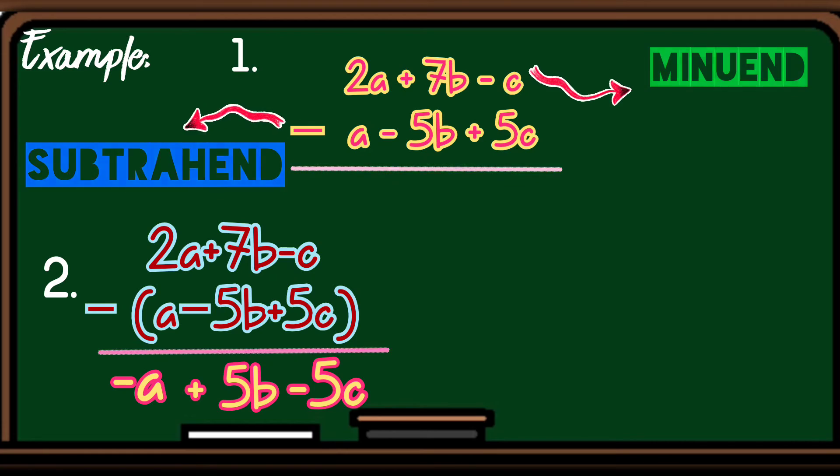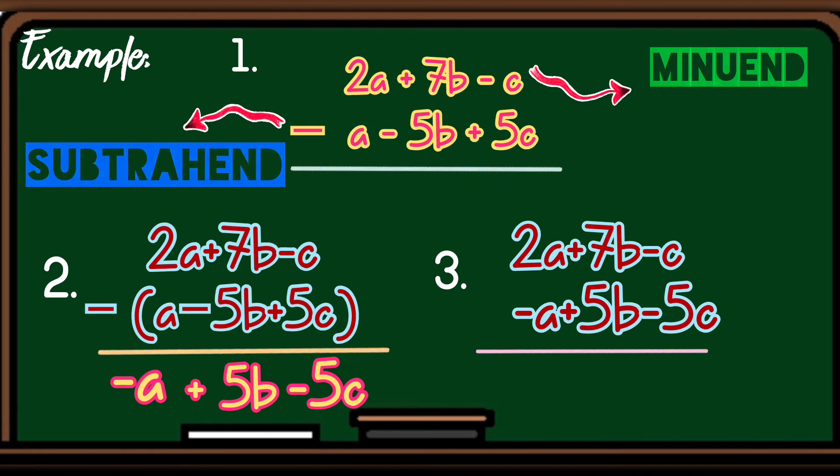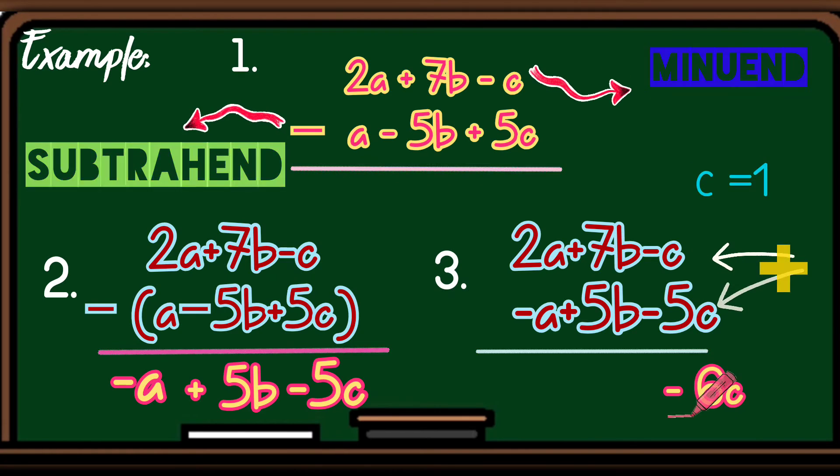Then, after that, pwede na natin i-add. So, magsisimula tayo sa kanan. Negative c plus negative 5c ay magiging negative 6c. So, bakit siya naging negative 6c? Kasi negative 1 plus negative 5 equals negative 6 and copy the variable c. Then, next, positive 7b plus positive 5b is equivalent to 12b. Then, next...